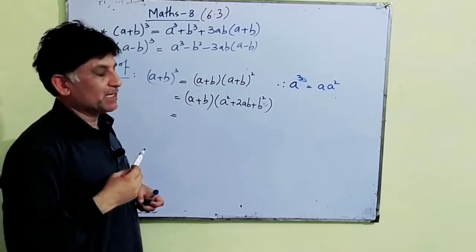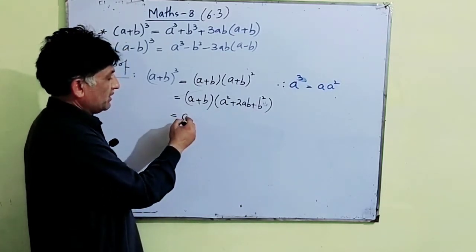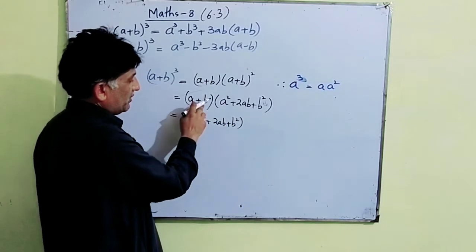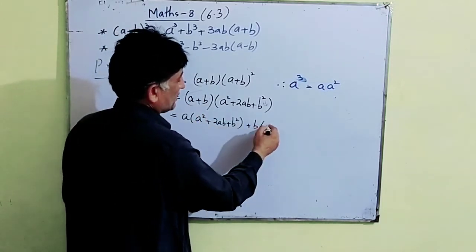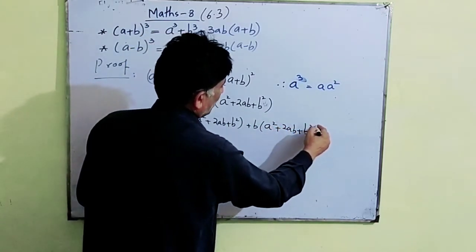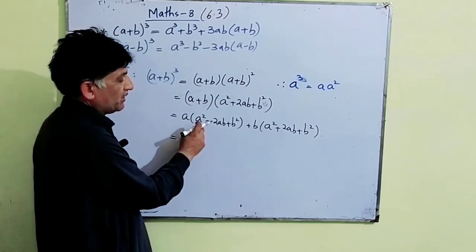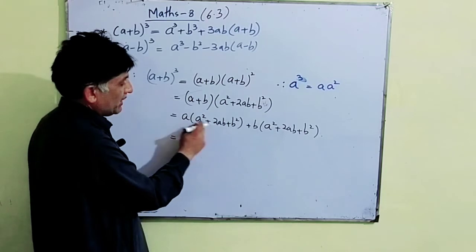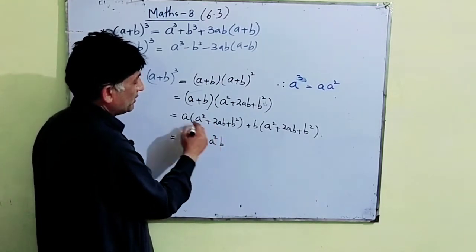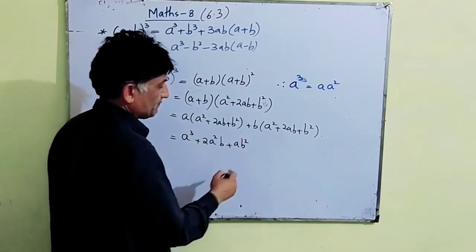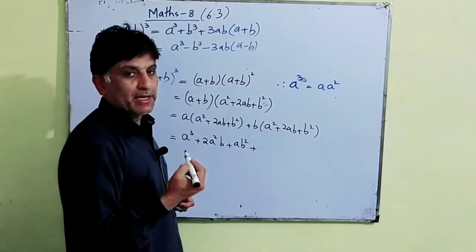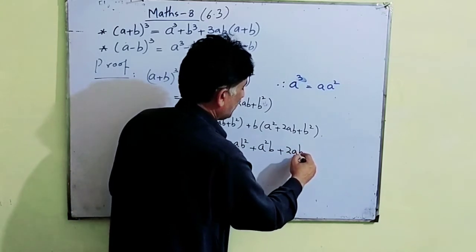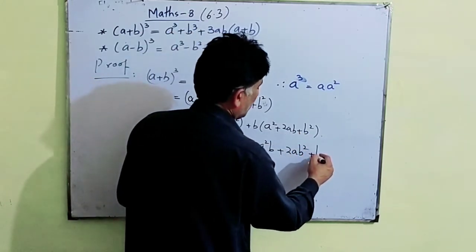Now the next step is horizontal multiplication. Multiply A with all terms: a(a² + 2ab + b²). Then multiply b with all terms. a × a² = a³, a × 2ab = 2a²b, a × b² = ab². Plus b × a² = a²b.